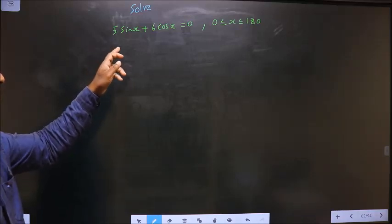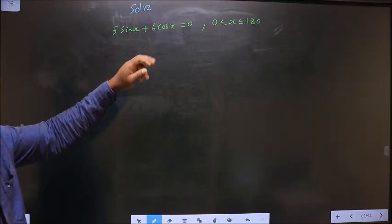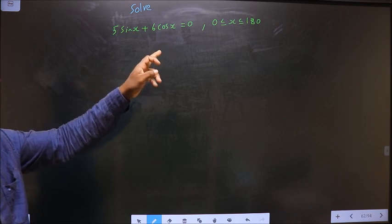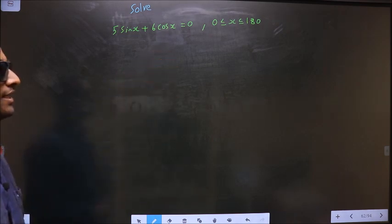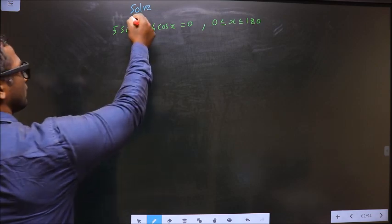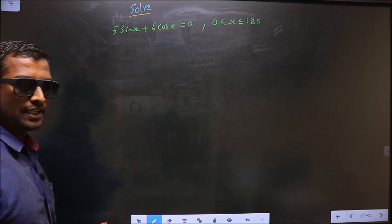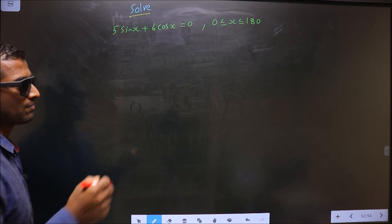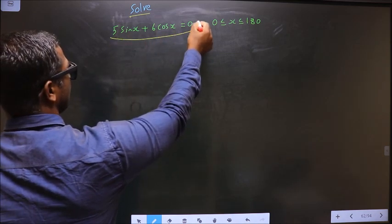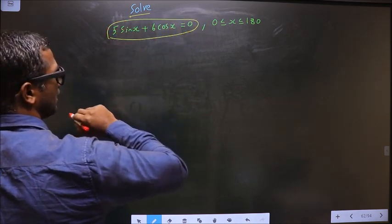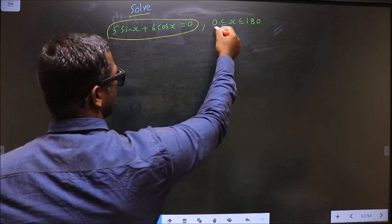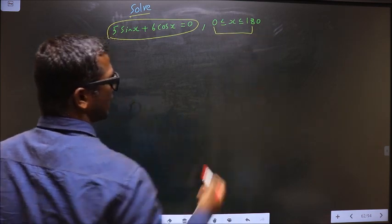Solve 5 sin x plus 6 cos x equal to 0 where x lies in the interval 0 to 180 degrees. Here they told you to solve, so you should find the values of x satisfying this equation and also it should lie in the interval 0 to 180 degrees.